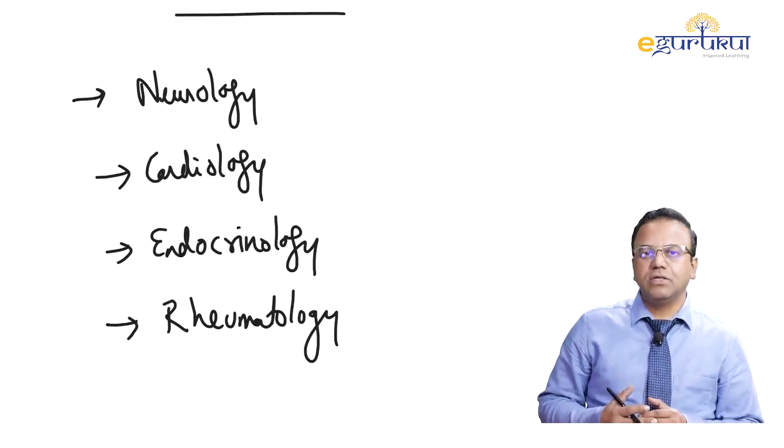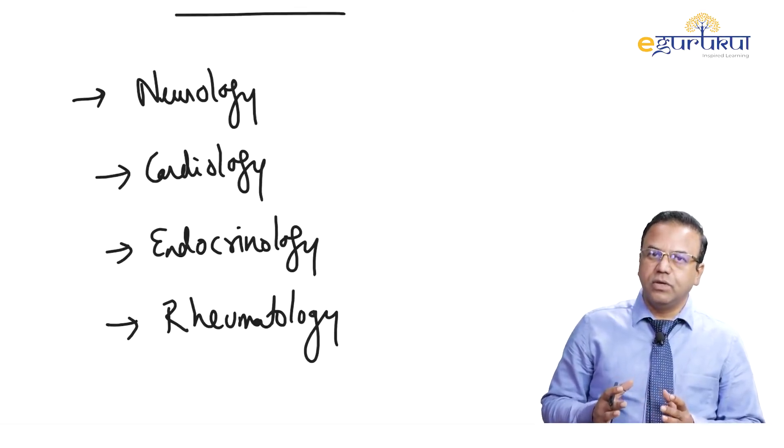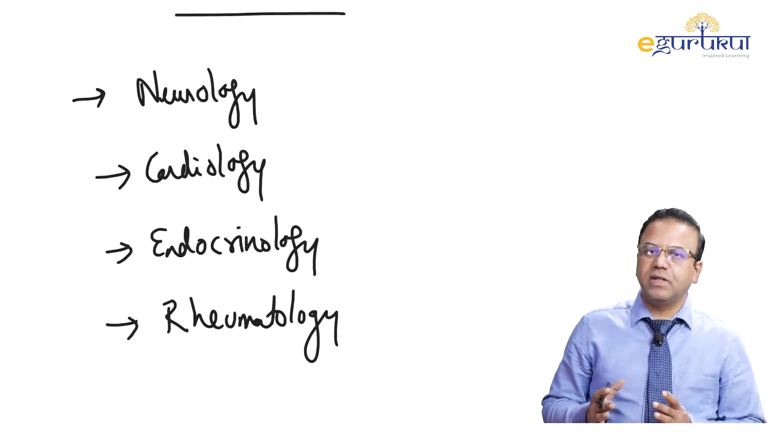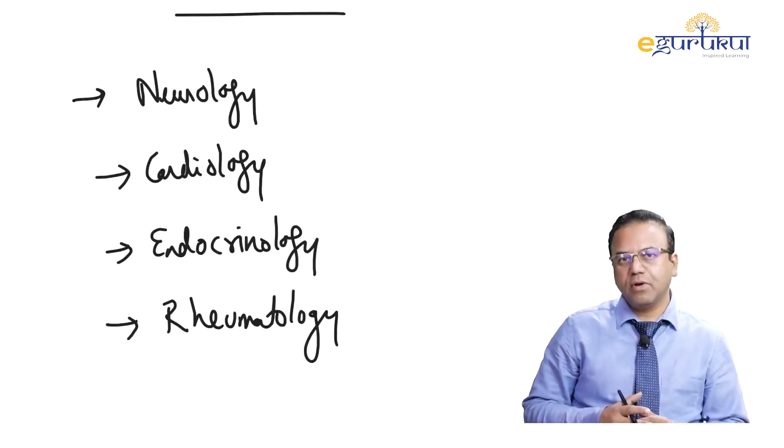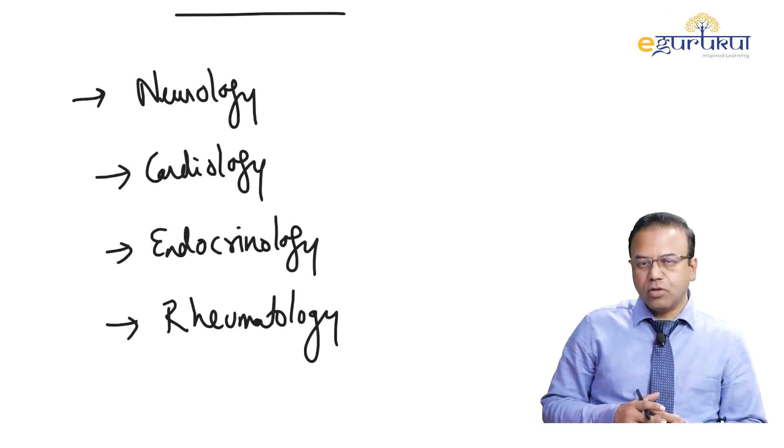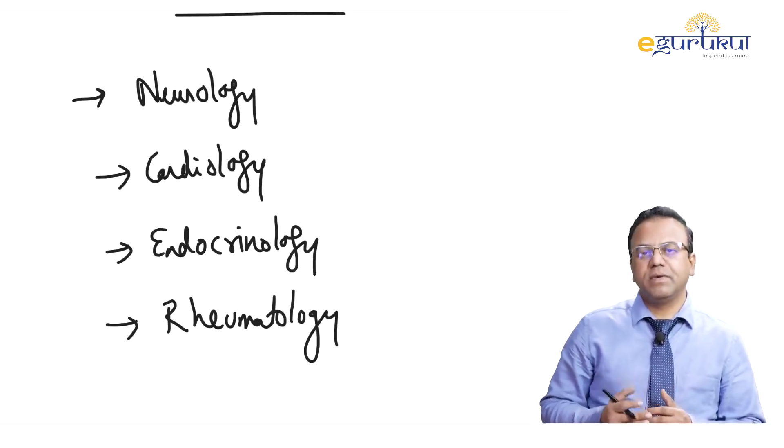For example, if you look at endocrinology, much of it is medicine core and you don't have much overlap in the basic sciences. Similarly for cardiology or neurology. Although there's minor overlap between orthopedics and rheumatology, rheumatology doesn't have much to pick up from the basic sciences.